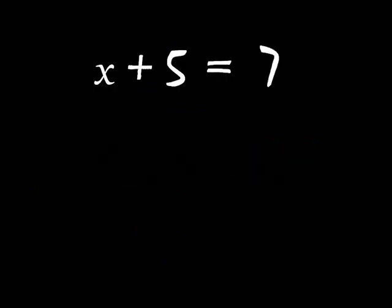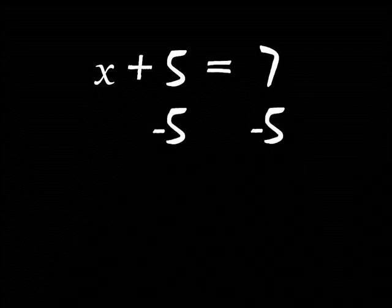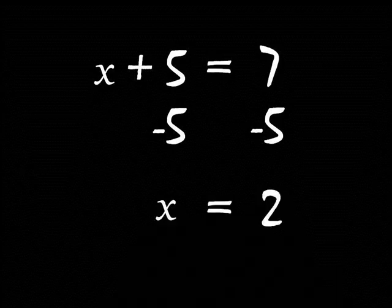Like if we have x plus 5 is 7, it's simple enough to just take away 5 from both sides of the equal sign. And now we're getting groovy, because what's left is x is 2.